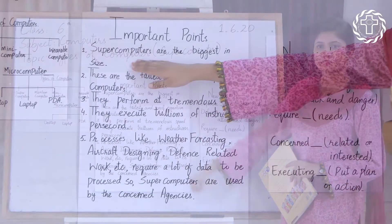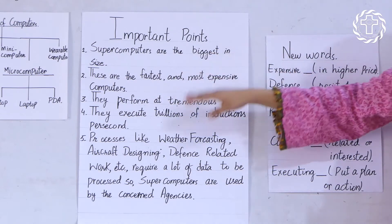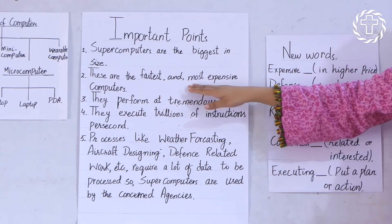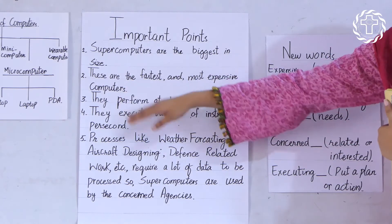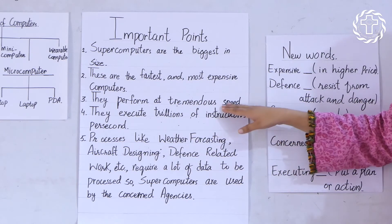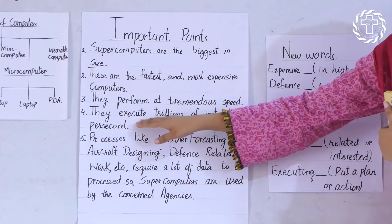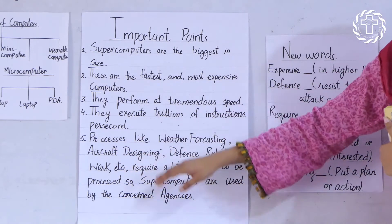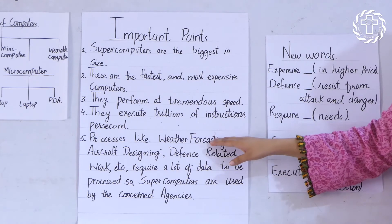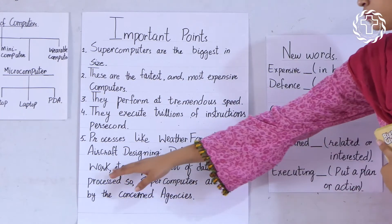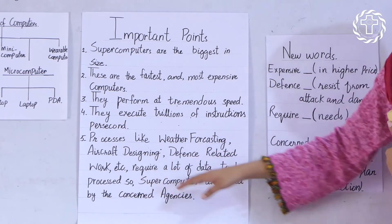Important points: Supercomputers are biggest in size. These are the fastest and most expensive computers. They perform at tremendous speed. They execute trillions of instructions per second. Processes like weather forecasting, aircraft designing, defense-related work, etc., require a lot of data to be processed. So supercomputers are used by the concerned agencies.